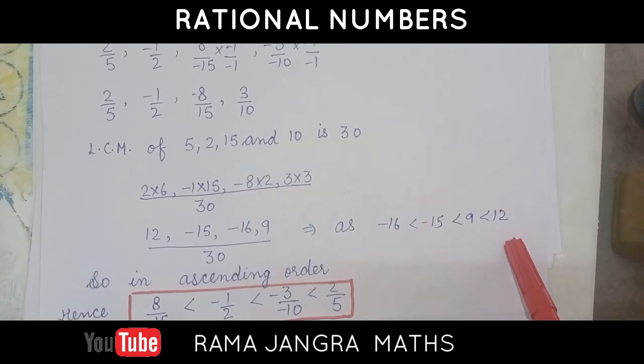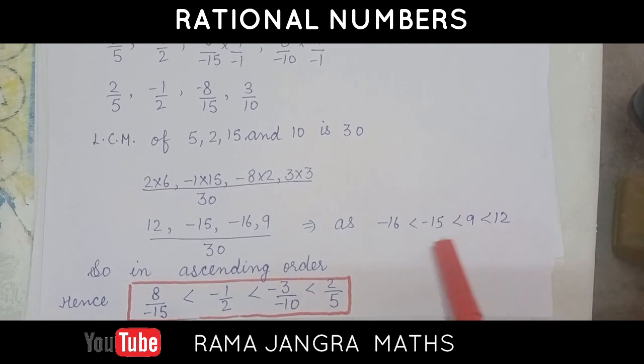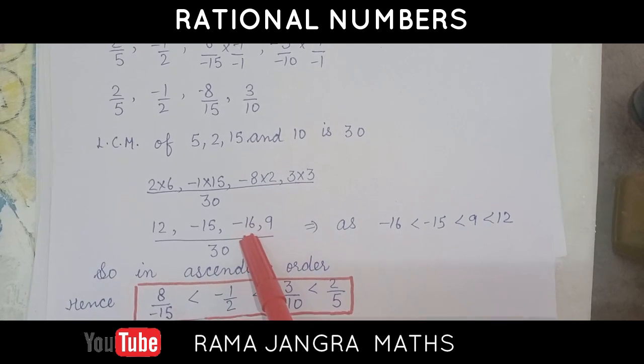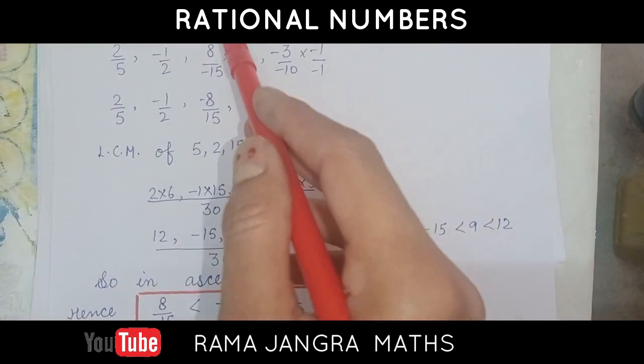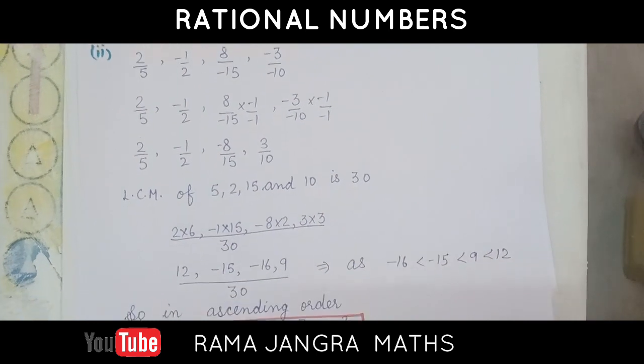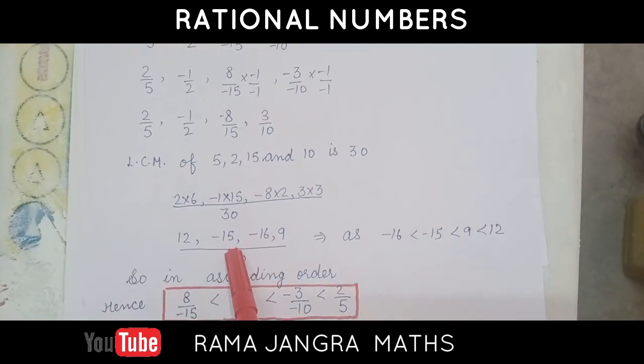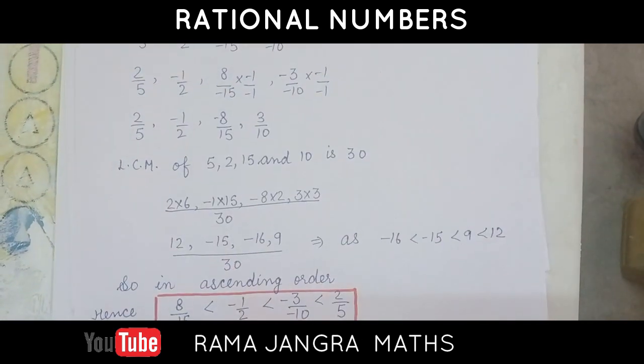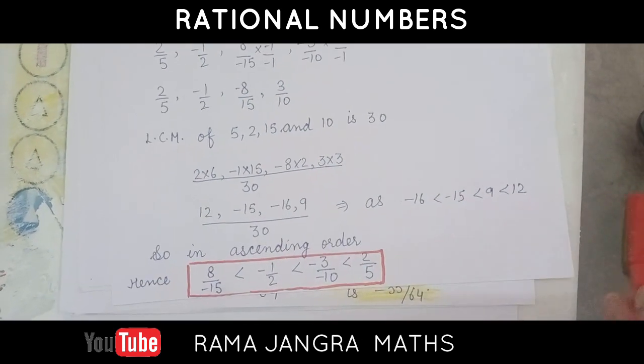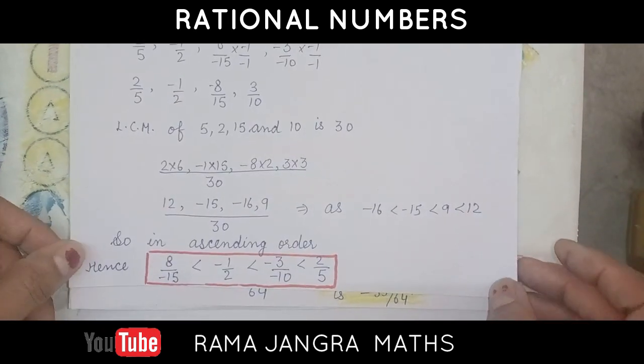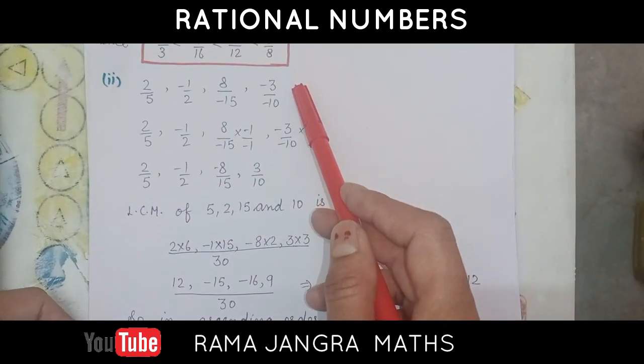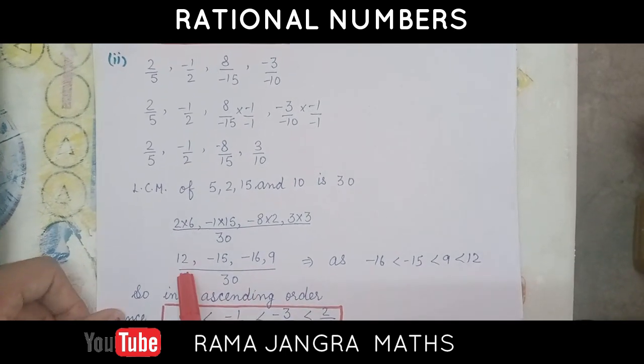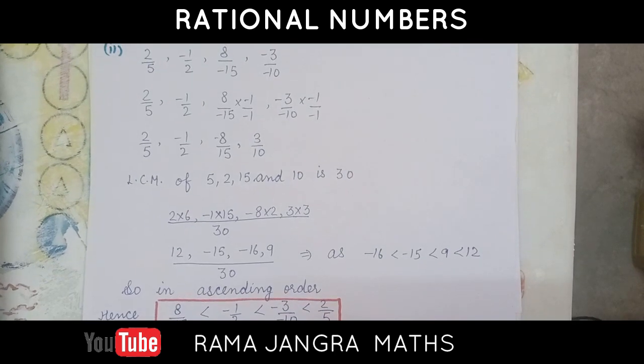Now, we have to arrange these in ascending order. Minus 16, which is the minus 16? Third one, which is at the third place, 8 by minus 15, then minus 15, which is at the second place, minus 1 by 2. Next one is 9, 9 is minus 3 by minus 10. And last one is 12, 12 at the first place, and it is 2 by 5.